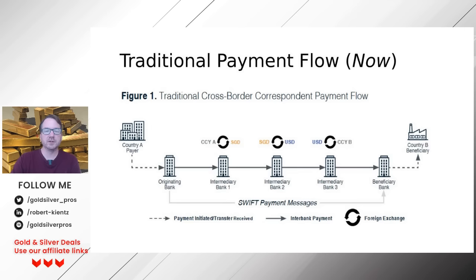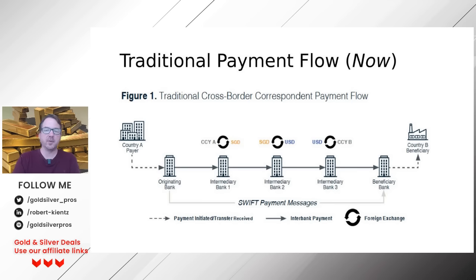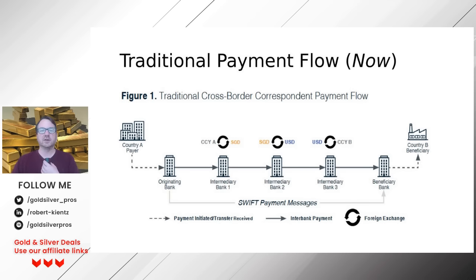This is the first of the two presentations. This is the traditional payment flow — what happens now, the fiat currency system. This is what happens if we're sending money from one jurisdiction to another, from one country to another. You can see here — and this comes from a SWIFT paper, all references will be at the very end — Country A, a payer sends money from their originating bank to a couple of intermediary banks, eventually to the beneficiary, the person receiving the money in Country B. There have to be a bunch of SWIFT messages along the way.